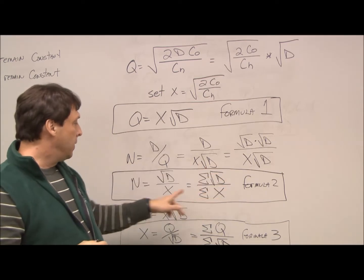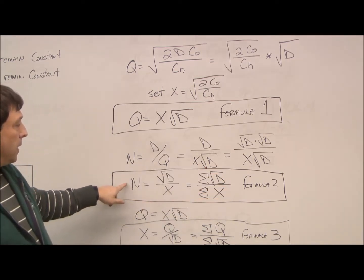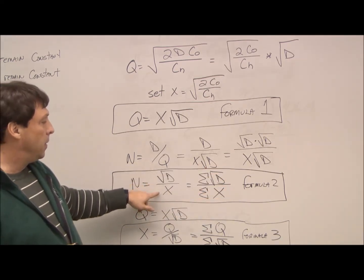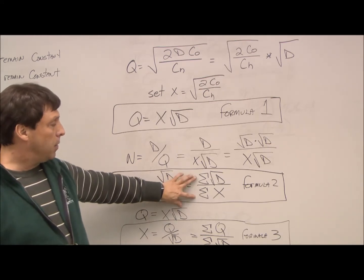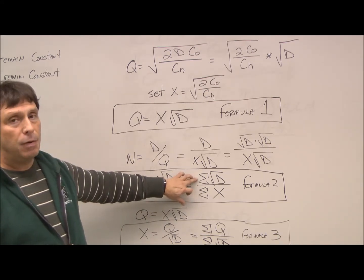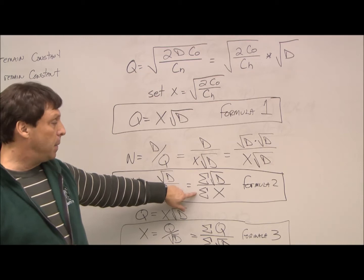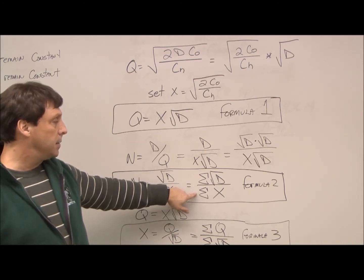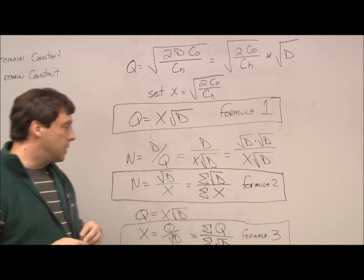Alright, so that gives us our second formula here, that N equals the square root of D over X, or we could do it as the summation of all our D's and the summation of all our X's would give us the same formula.